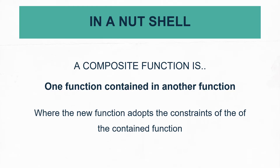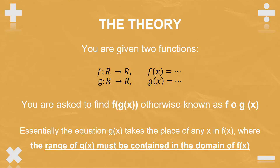In a nutshell, a composite function is one function, one equation, contained in another equation. You will be given two equations and the new function, which is the composite function, will adopt the constraints of the equation put on the inside. You're usually given two functions, usually f of x and g of x, and you're asked to find f of g of x, otherwise known as FOG.